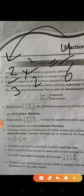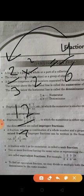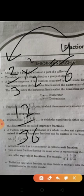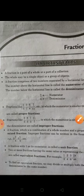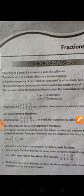Similarly, we can continue multiplying by 3, 4, 5, 6 to find more equivalent fractions. If the number 12 upon 36 is given, we can also divide to find equivalent fractions — dividing by 4, by 12, by 2, or by 3. So we can find equivalent fractions by both multiplying and dividing the numerator and denominator.